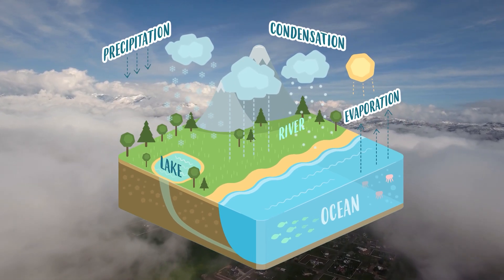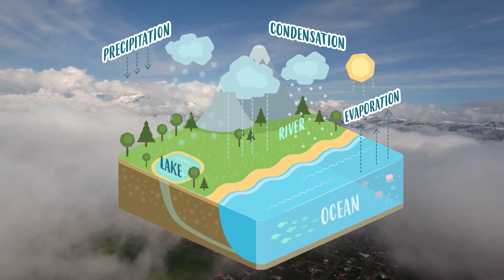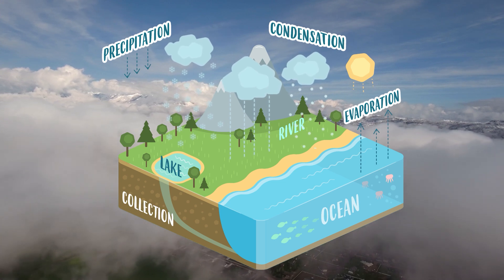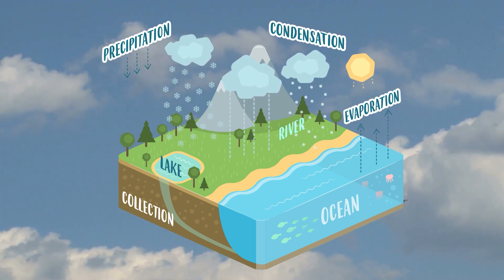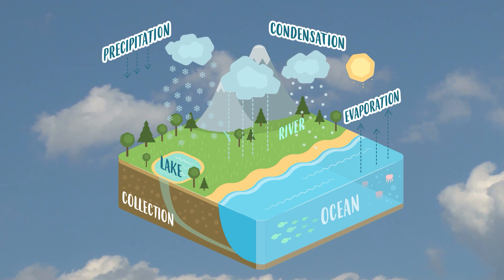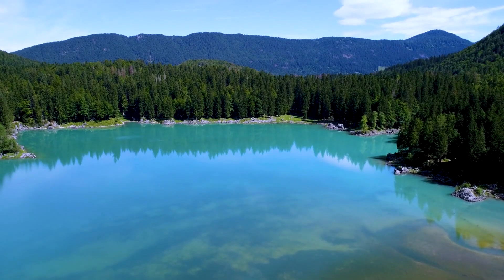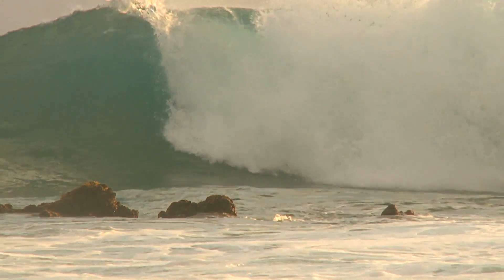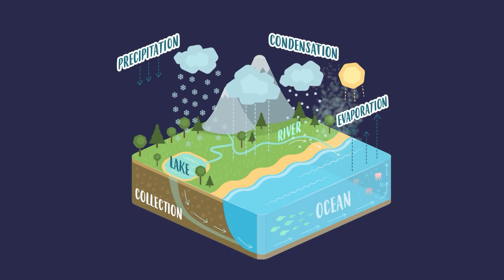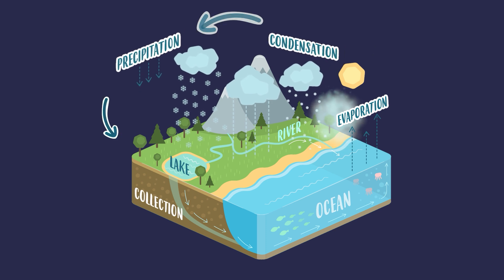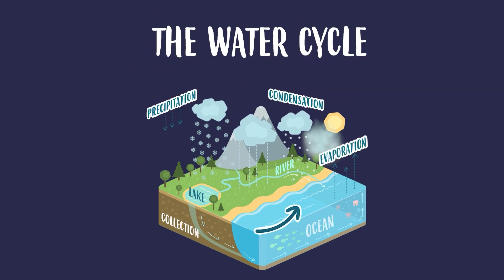After precipitation we have the water cycle's last phase — collection! Water comes back to the earth; it falls and goes into rivers, lakes and seas. Once on the earth's surface again, water is heated by the sun, starting again the fascinating journey we call the water cycle.